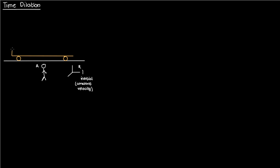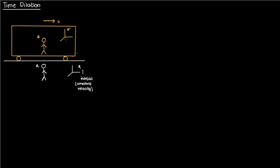Suppose also that I have a train moving at a constant velocity of v to the right, and inside this train is an observer B. The reference frame of B is R'. This reference frame is also an inertial reference frame because it's moving at a constant velocity.